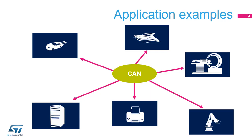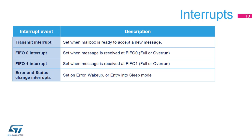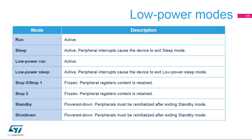The Controller Area Network CAN bus was originally designed for automotive applications, but is now also used in many other contexts. Here is a summary of CAN interrupt events: transmit, receive buffers for FIFO 0 and FIFO 1, and error and status change interrupts. Here is an overview of the CAN low-power configuration modes.